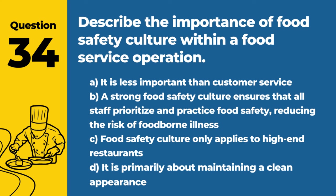Question 36. What are the guidelines for manual dishwashing in a three-compartment sink? Answer: B. Wash, rinse, and then sanitize. This three-step process ensures dishes are cleaned, rinsed of soap and debris, and then sanitized to eliminate pathogens.